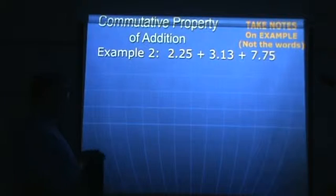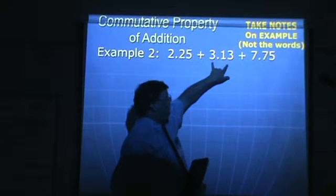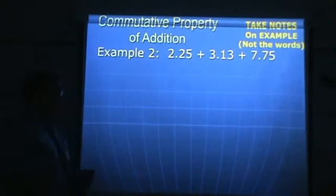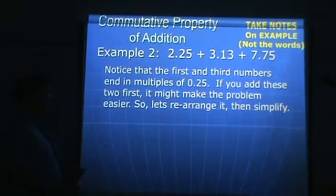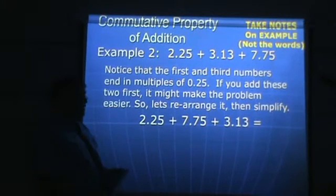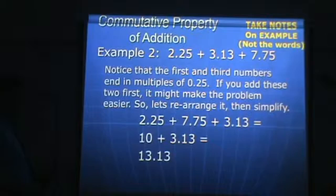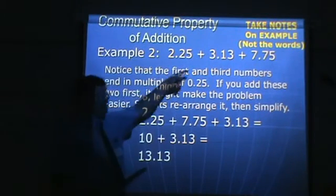Here is another example of the commutative property of addition using rational numbers with decimals. If I have 2.25 and 3.13 and 7.75 all being added together, I might want to rearrange it to make it a little bit easier. I notice that the first and third terms both have multiples of 0.25 at the end, so I rearrange the problem to bring these two next to each other — that is the commutative property of addition. Adding them gives a whole number of 10, which is easy to add to 3.13 to get 13.13.